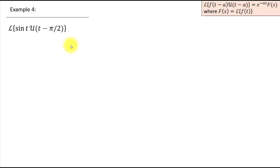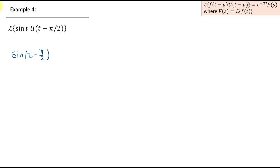Here's our last example practicing the Second Translation Theorem. We have the Laplace transform of the product of sin(t) and the unit step function at π/2. We do have a product, but it's not in the correct form because the function must be a translated function with the same shift as the unit step value. We need to rewrite sin(t) as a translated function shifted by π/2 without changing the original function.